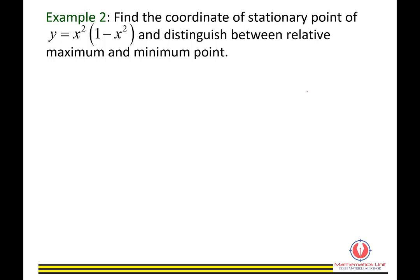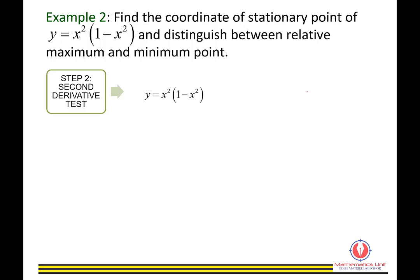Next, we distinguish between relative maximum and minimum points. We can use either the first or second derivative test if not stated in the question. For this example, we use the second derivative test. From dy/dx equals x squared times negative 2x plus 1 minus x squared times 2x, simplifying gives negative 4x cubed plus 2x.